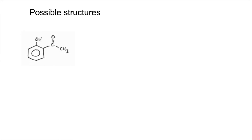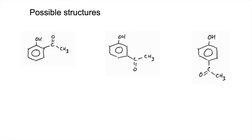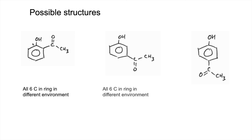The possible structures for the molecular formula, given it must be a phenol and a ketone, are the 1,2-, 1,3-, or 1,4-substituted isomers. In the 1,2- and 1,3-positions all six carbons in the benzene ring are different, giving six environments each — so it can't be those. It must be the 1,4- (para) isomer. We can prove it: two carbons are equivalent, another two are equivalent, and the remaining two are each unique, giving exactly four environments in the benzene ring. Therefore that must be the correct structure.